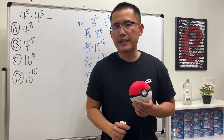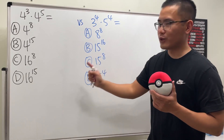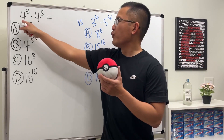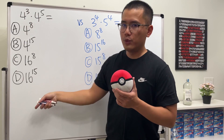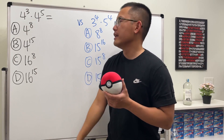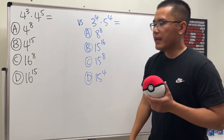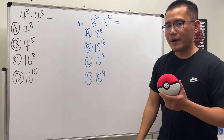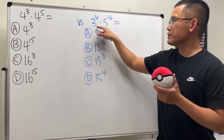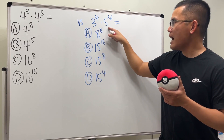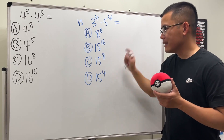Do you really know the rules of exponents? If so, go ahead and try these two questions. The first one is 4 to the 3rd power times 4 to the 5th power — notice that the bases are the same. For the second one, we have the powers being the same: 3 to the 4th power times 5 to the 4th power. Simplify that.